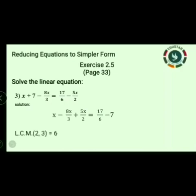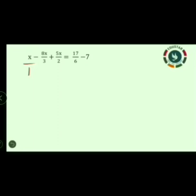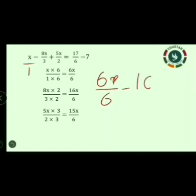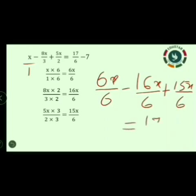So we are going to find the LCM. LCM of 2 and 3 is 6. For the first term, denominator is 1, so we multiply numerator and denominator by 6: x into 6 is 6x, 1 into 6 is 6. Second term denominator is 3, multiply by 2: 8x into 2 is 16x, 3 into 2 is 6. Third term denominator is 2, multiply by 3: 5x into 3 is 15x, 2 into 3 is 6. So we substitute: x becomes 6x/6, 8x/3 becomes 16x/6, and 5x/2 becomes 15x/6. Right hand side is 17 by 6 minus 7.